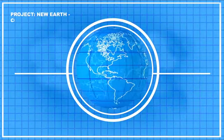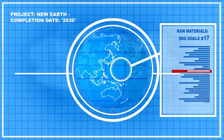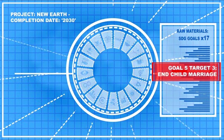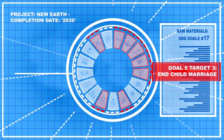But wait, in order to build this new world, ending child marriage can't just be treated as one target among many, because if we don't end it, eight of the global goals cannot be met.